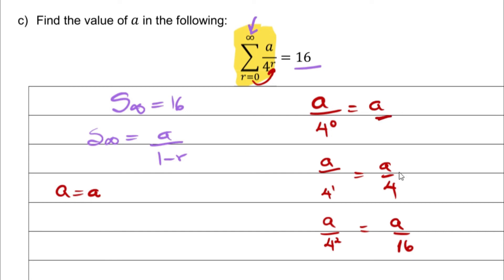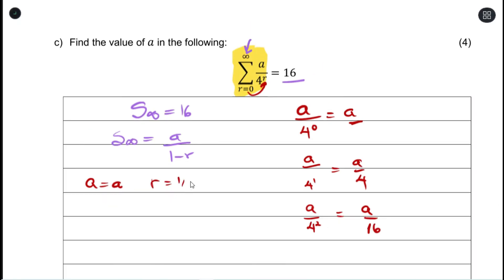To get our r, we divide our second term by first term. When you do the simplification, you get 1 over 4. So all we need to do now is substitute this into the sum to infinity formula.